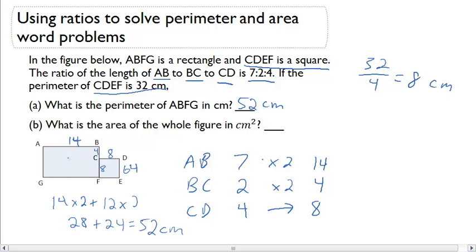And 14 by 12, that area is going to be 168. Let's add those together. 168 plus 64, 2, carry the 1, 3, carry the 1, 232 centimeters squared.